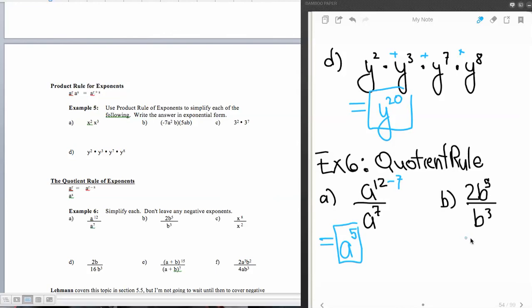When we have monomials involved, the same thing. Division of the numbers, 2 divided by 1, which is 2, and numerator exponent minus denominator b squared, 2b squared there.